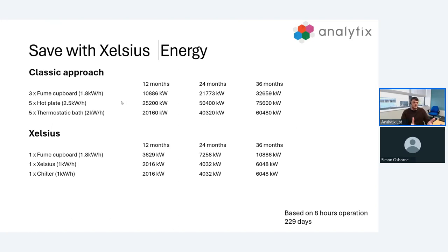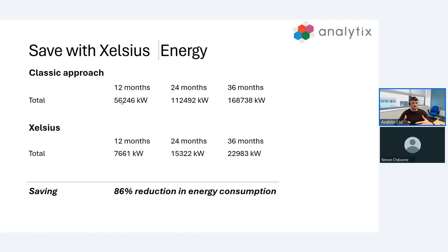Next is energy. With three fume cupboards, five hot plates, and five thermostatic baths, obviously we're going to use a lot of energy. This is based on an eight hour day or eight hours of operation. You can see that the savings energy-wise is massive. All we have to use is one fume cupboard, Excelsis block, and an external chiller. All in all, this results in an 86% reduction in energy consumption.